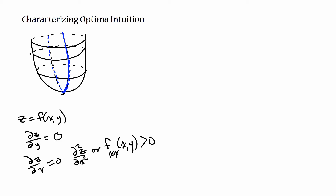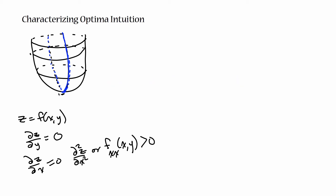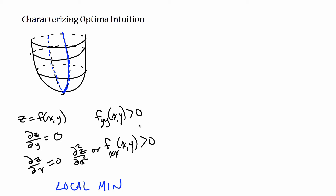Same thing for y — to the left of the critical point the partial derivative is decreasing, on the right it's increasing, going from negative to positive, so the second derivative as it goes through the critical point is going to be greater than zero. That's what happens at a local minimum. And for a local maximum it's the same but opposite — the second derivative will be negative for each one.